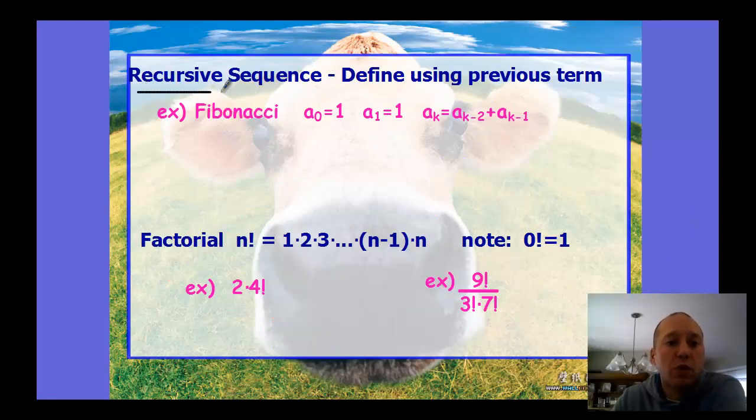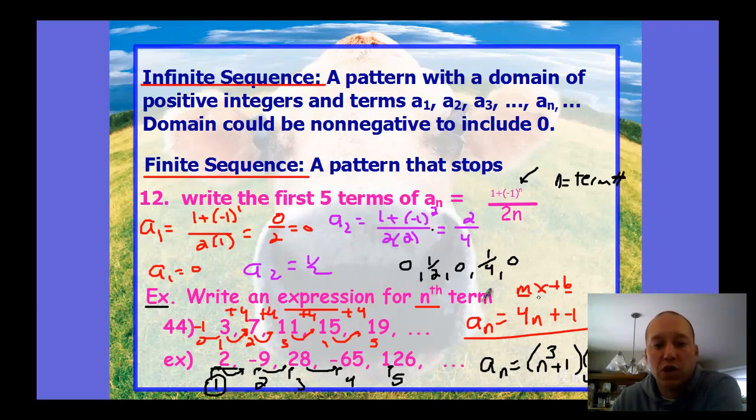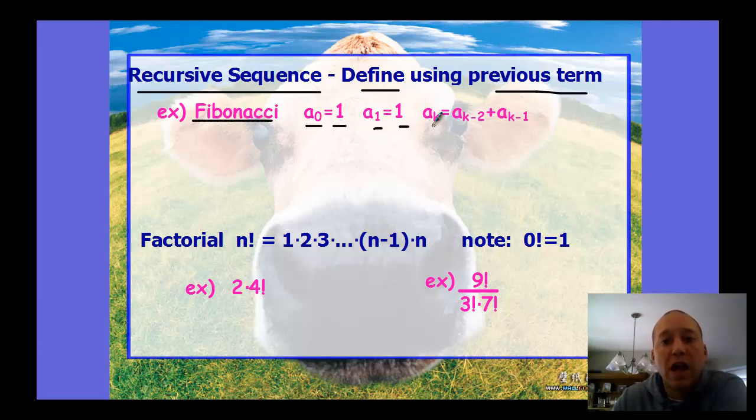The recursive sequence is how we typically think of patterns - it's defined using the previous term. When we write equations, we like to write for the nth term. Recursive is typically how we see the pattern, even though it doesn't help us as much when we write out the definition. Fibonacci is a famous recursive sequence. Notice how it defines the 0 term as 1, the first term as 1, and then every k term after is defined by using ak-2, which is two terms previous to the k term, plus ak-1, which is the term previous to k.